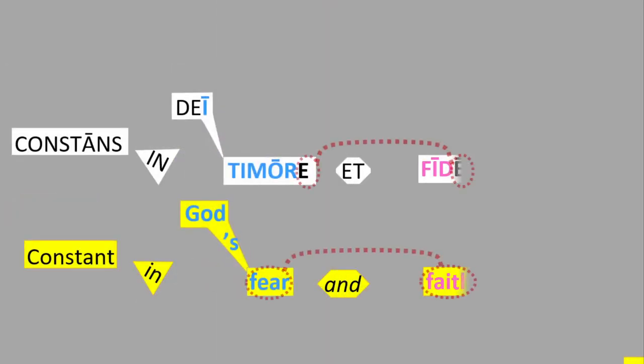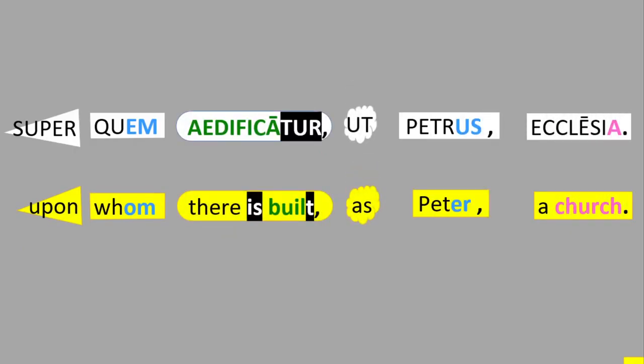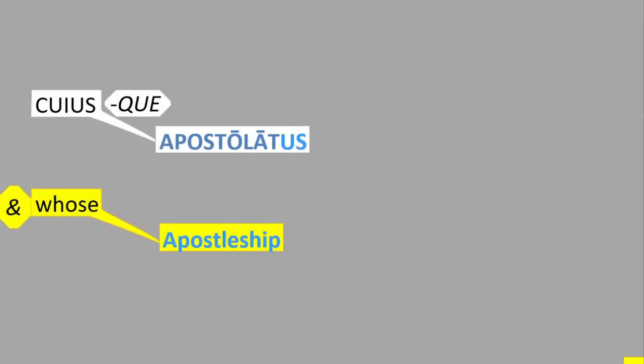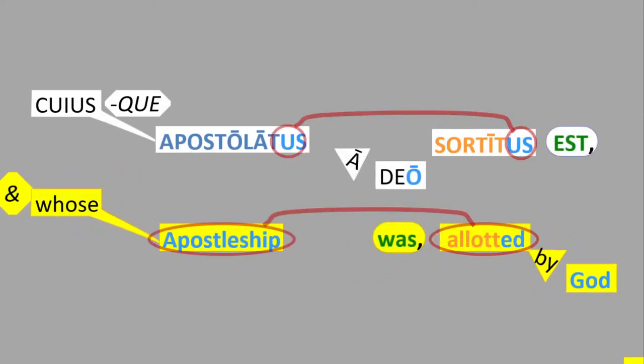caelis patrum magnificant dominum constans in dei temore et fide immobilis superquem edificatur ut petrus ecclesia quiusque apostolatus a deo